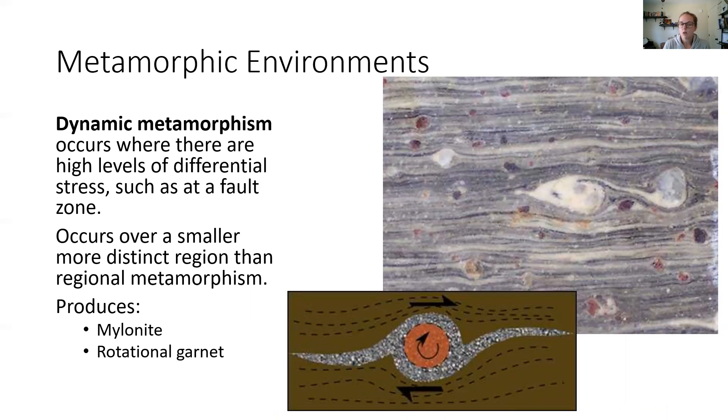It generally occurs in smaller regions, but it does create this beautiful texture that we call mylonite. And that's when you get those little swirls. As you have that differential shear stress, the grains inside that shear zone start to rotate. And it kind of looks like a hurricane or a storm on Mars or something like that. Very beautiful.